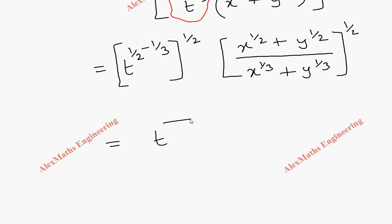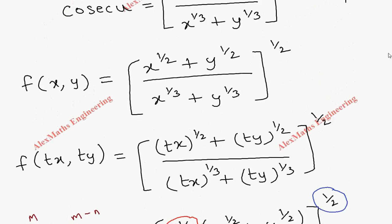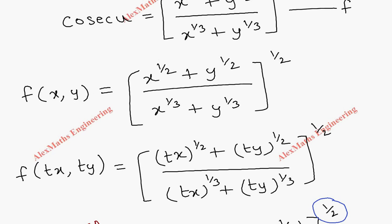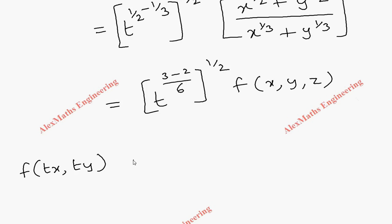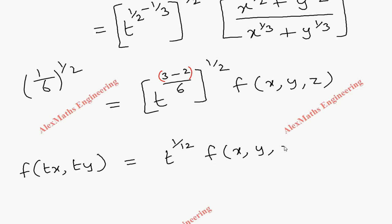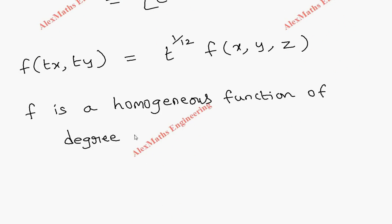Simplifying 1/2 − 1/3 by taking LCM 6 gives (3 − 2)/6 = 1/6, and we still have the outer power 1/2, so multiplying: (1/6) × (1/2) = 1/12. Therefore f(tx, ty) = t^(1/12) · f(x, y), which means f is a homogeneous function of degree 1/12.